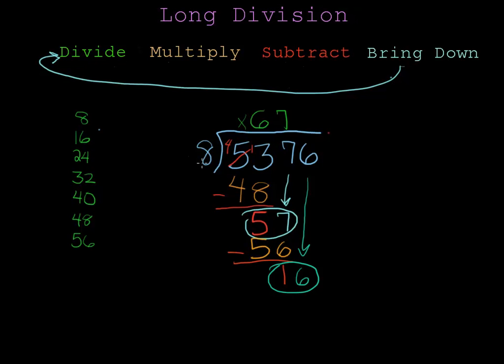This time I do 8 into 16 and that's 2 times. Now I kind of know that goes in evenly but I'll just multiply to get 16 and then subtract to get 0. And that proves that my final remainder is 0 and I can leave my answer as it is. So my final answer is 672.